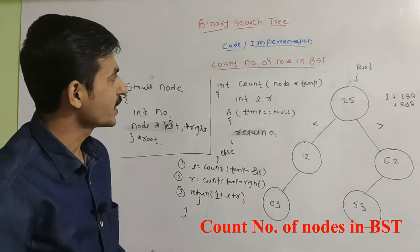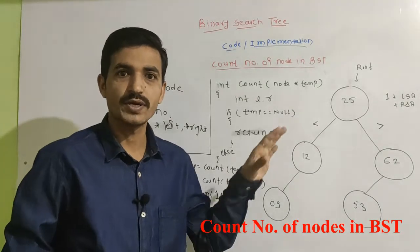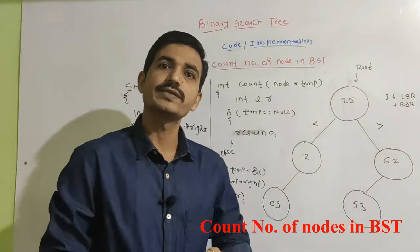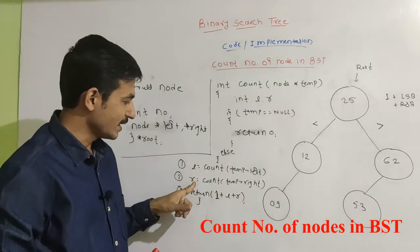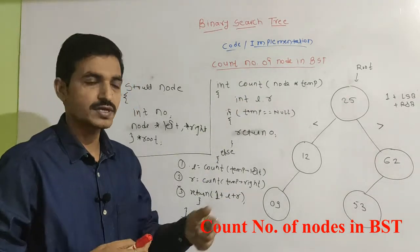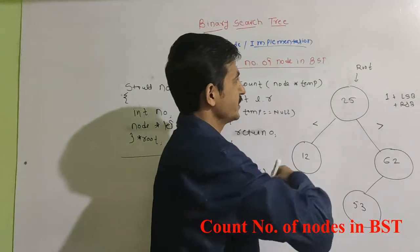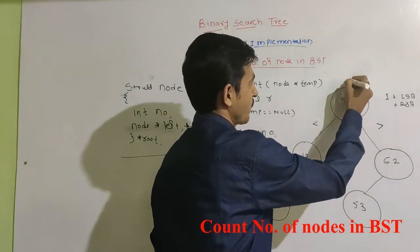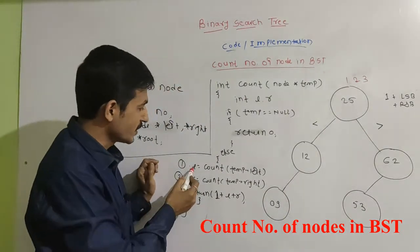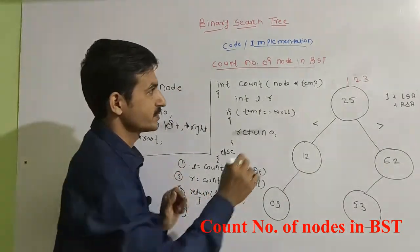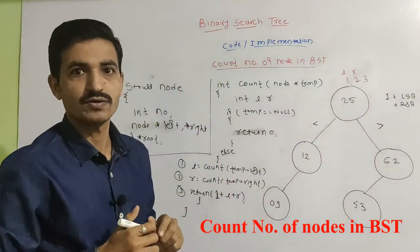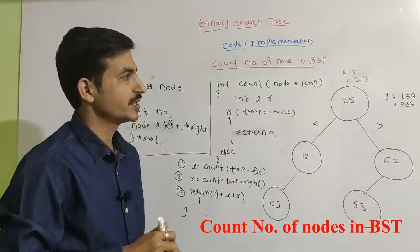Now we will walk through how to execute that particular function. We know there are three important lines in the function: one for the left side (L), one for the right side (R), and one to return 1 plus L plus R. Statement 1 is L, statement 2 is R, and statement 3 holds the value returned by the function. When we call the function, root needs to be passed as the parameter.